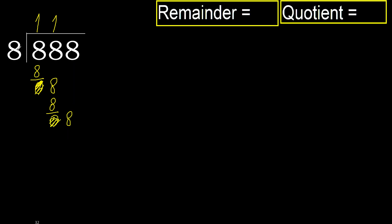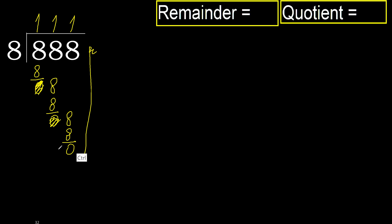Next digit: 8. 8 multiplied by 1 is 8, is not greater. Subtract. There is no next number, therefore finished.